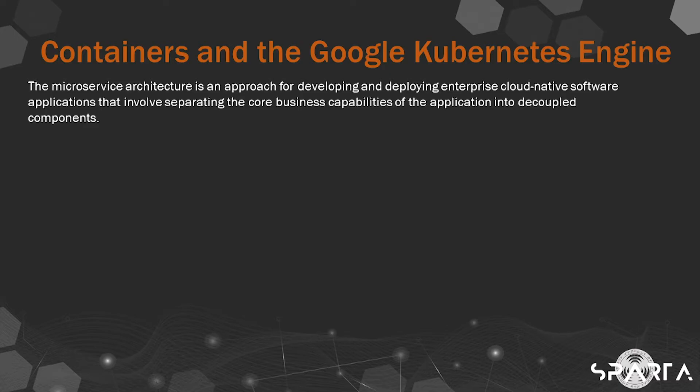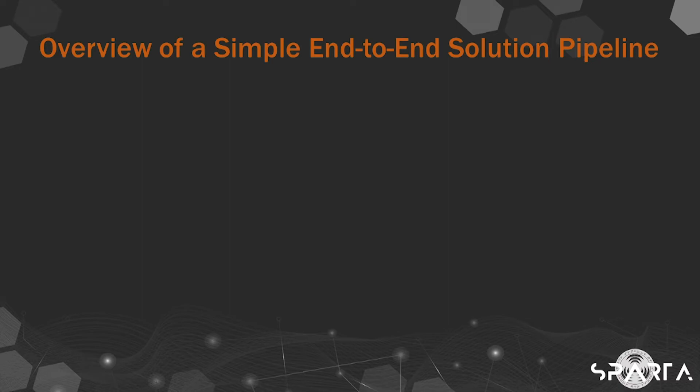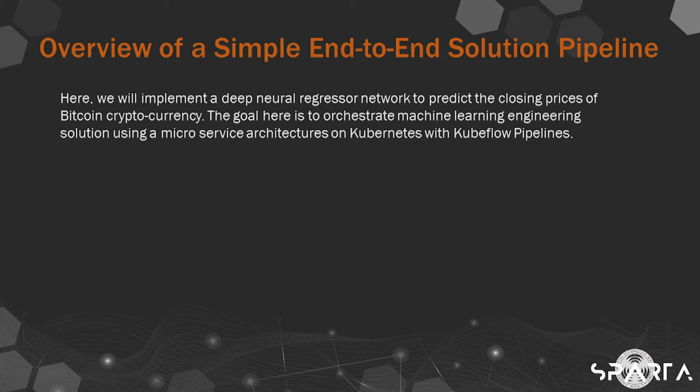The microservice architecture is an approach for developing and deploying enterprise cloud-native software applications that involves separating the core business capabilities of the application into decoupled components. A Kubeflow pipeline component is an implementation of a pipeline task. Here, we will implement a deep neural regressor network to predict the closing prices of Bitcoin cryptocurrency, orchestrating the machine learning engineering solution using microservice architectures on Kubernetes with Kubeflow pipelines.